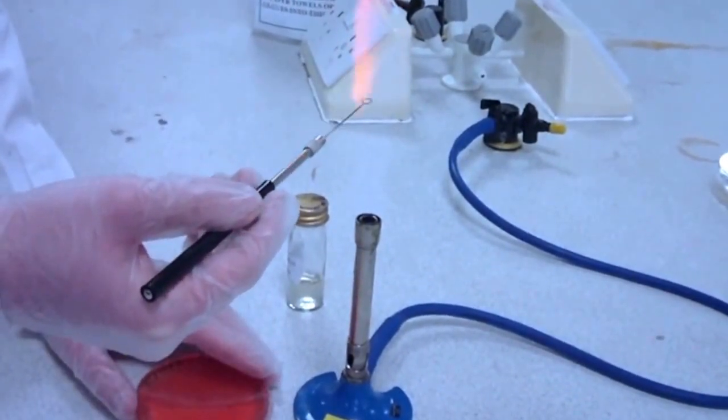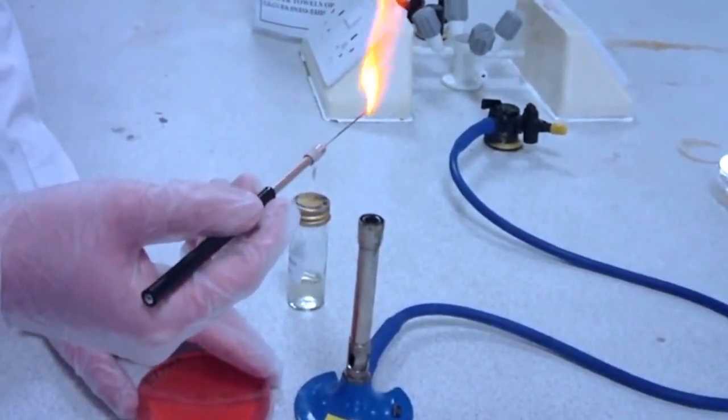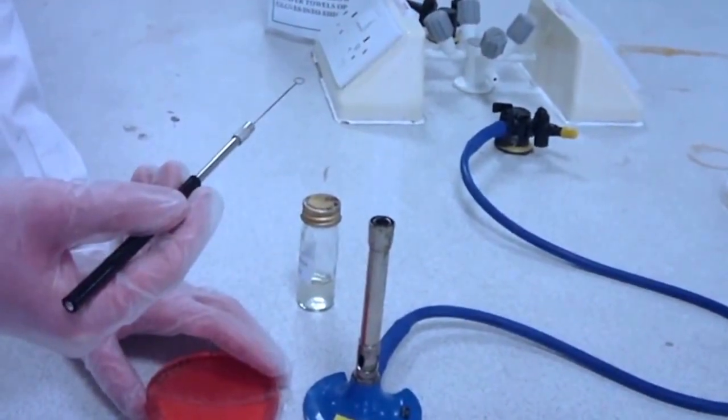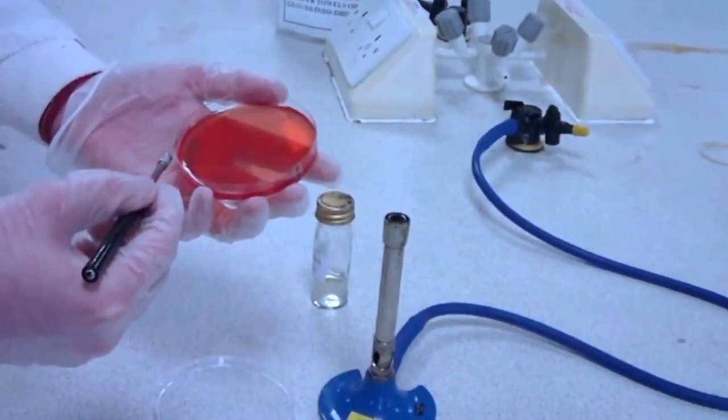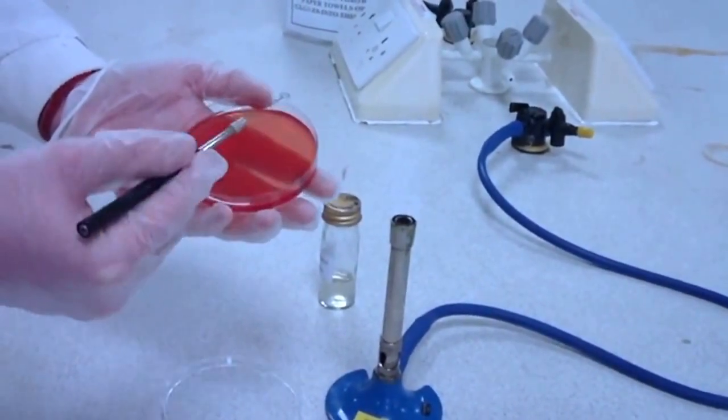Reflame the loop and allow to cool. And from the circle you've just rubbed on your agar, streak 3 to 4 lines in a clockwise manner to your next dot.